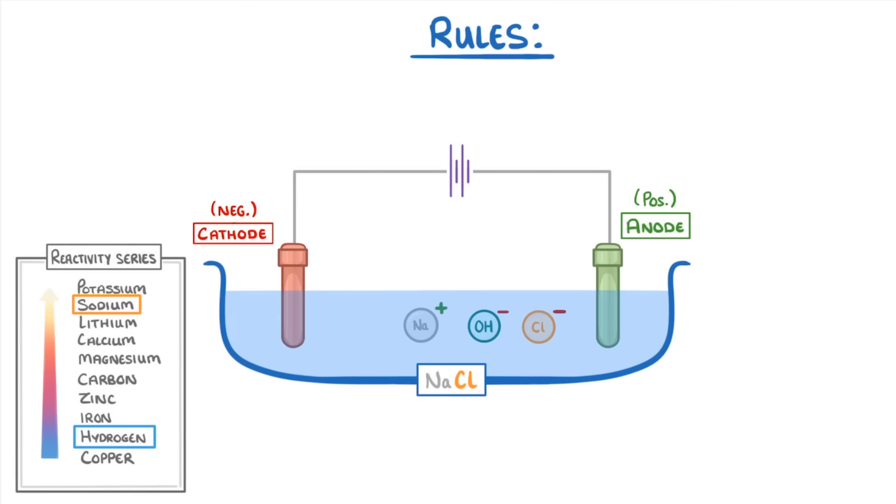Meanwhile at the anode, we have to pick between chloride and hydroxide ions. And because chloride is a halide, that will be the one that gets discharged. So it will lose electrons and form chlorine gas.